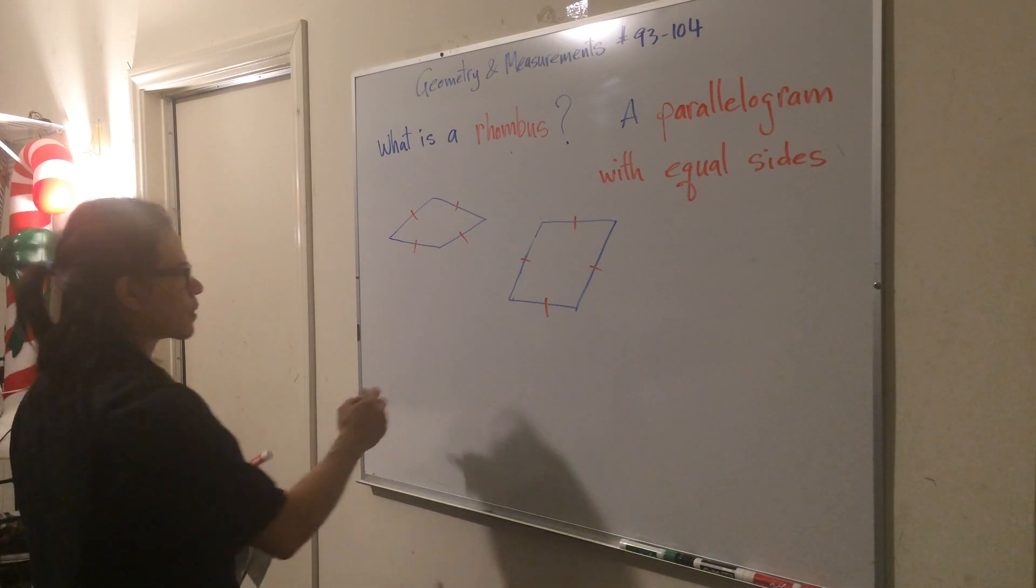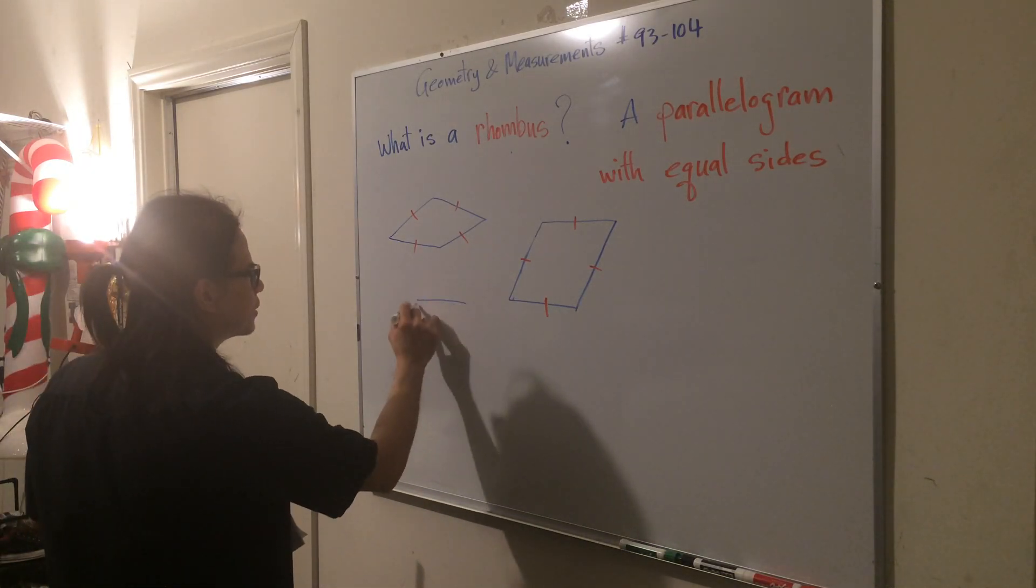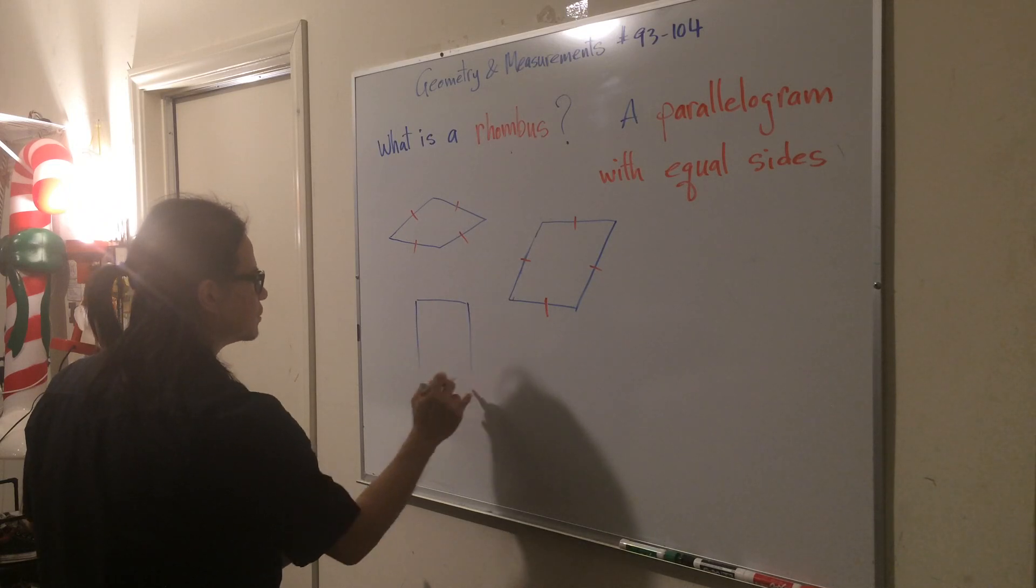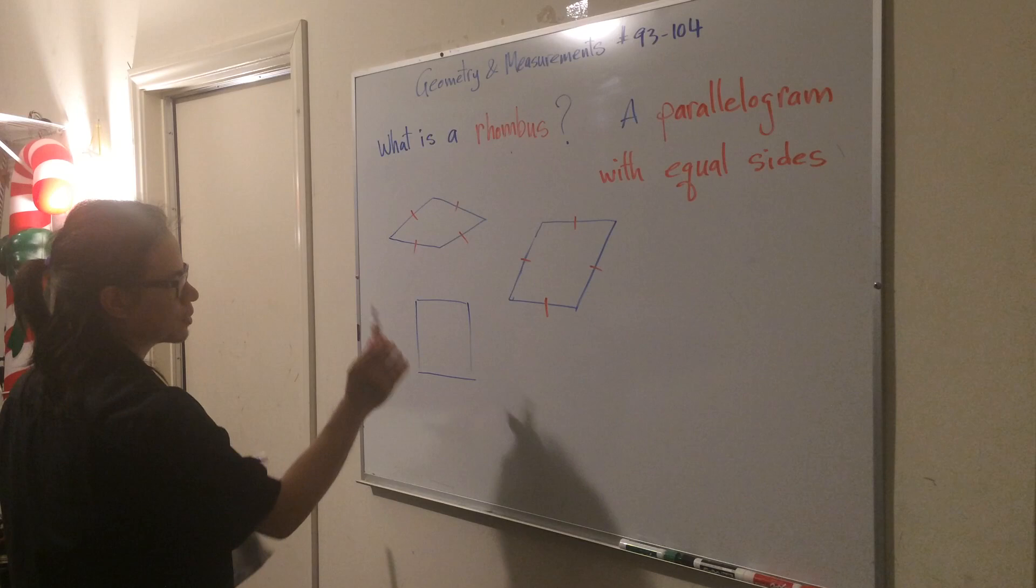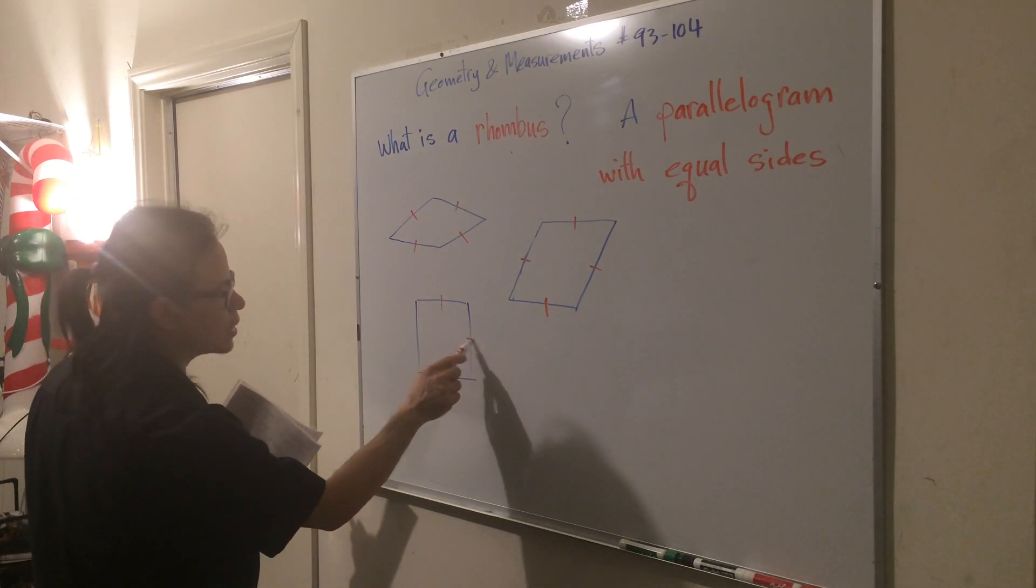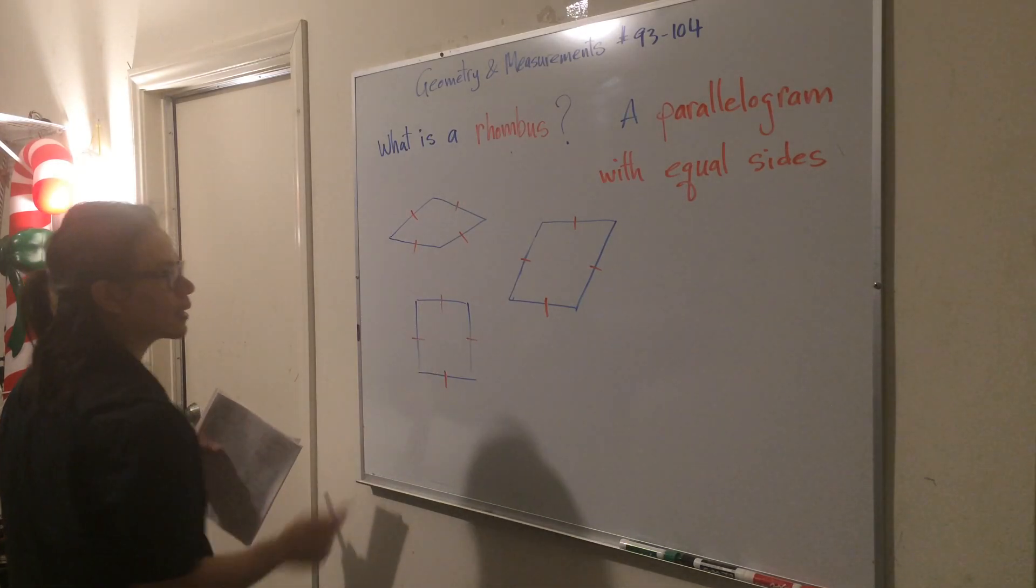Okay. Now, many people don't know that a square is a rhombus, too. The reason is because a square has four equal sides, right? So like that.